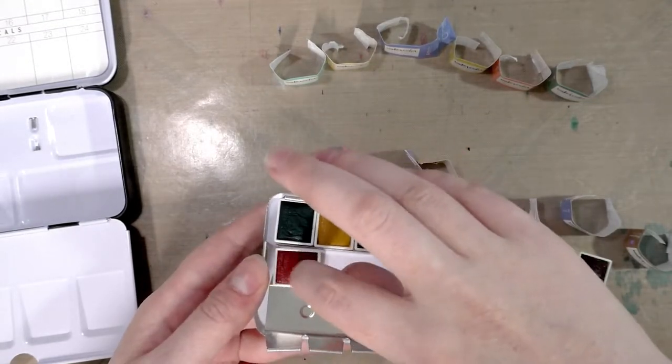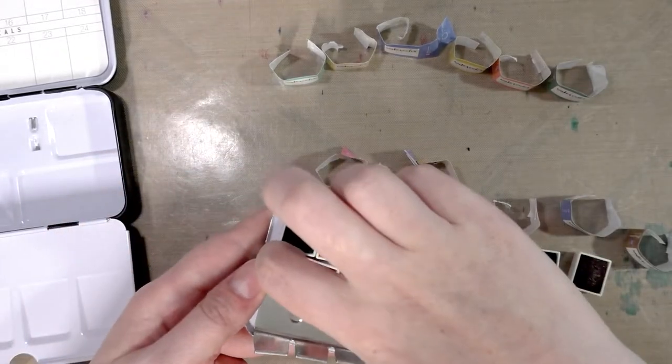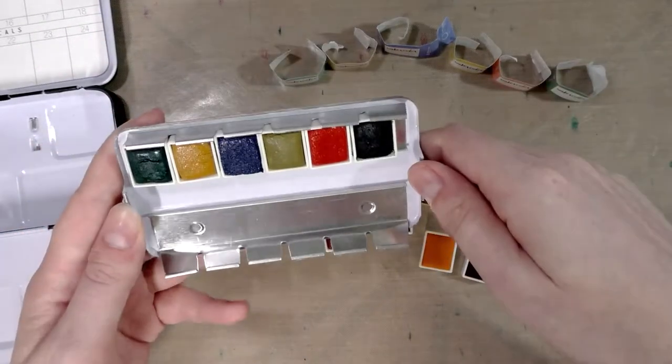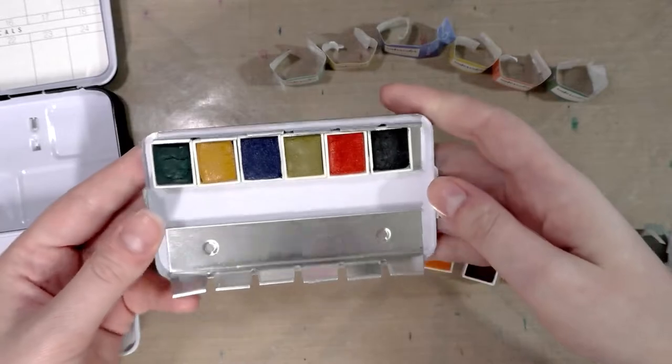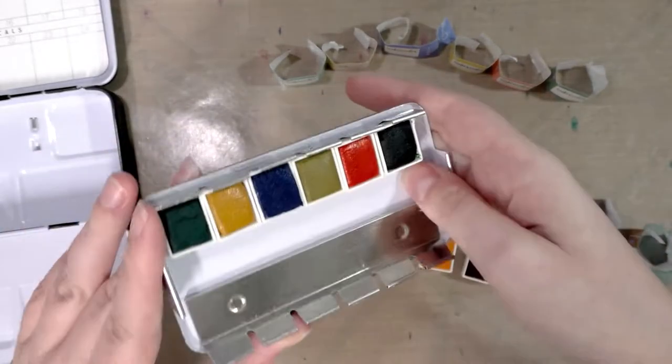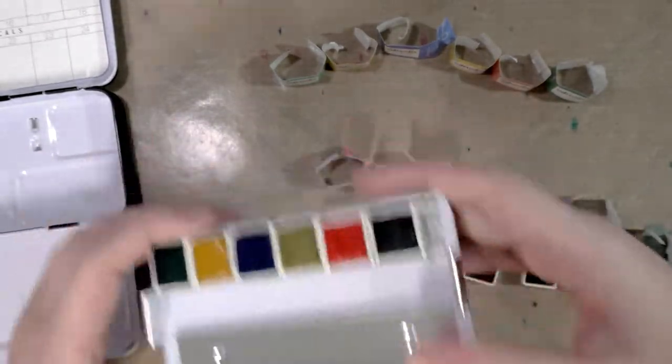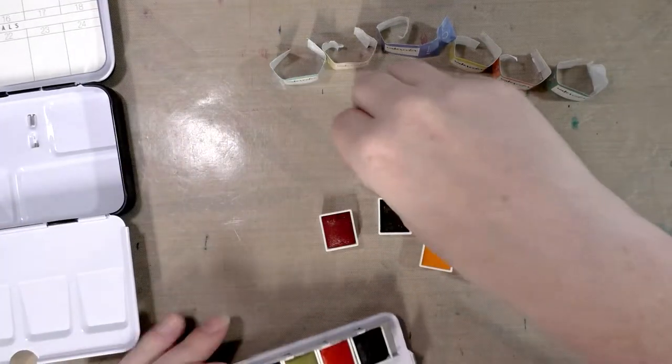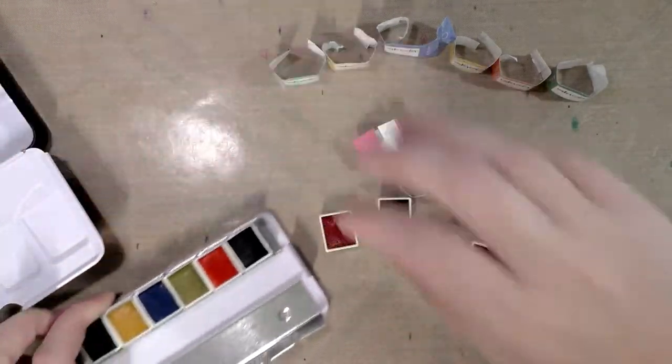With these sort of sets, you could do another row of your own paints. Half pans are available both on Amazon and through Jerry's Artarama. If you wanted this to be your main kit, you could fill the whole middle with colors.